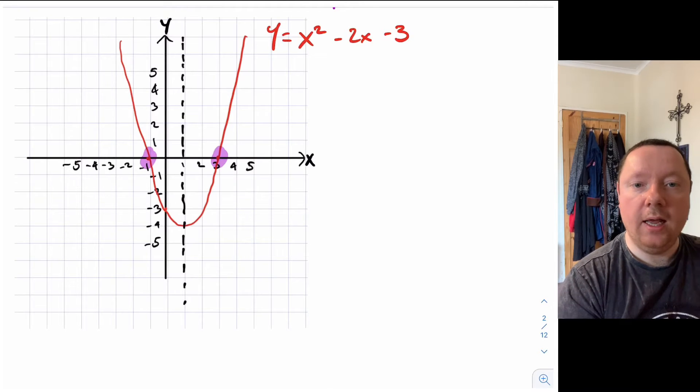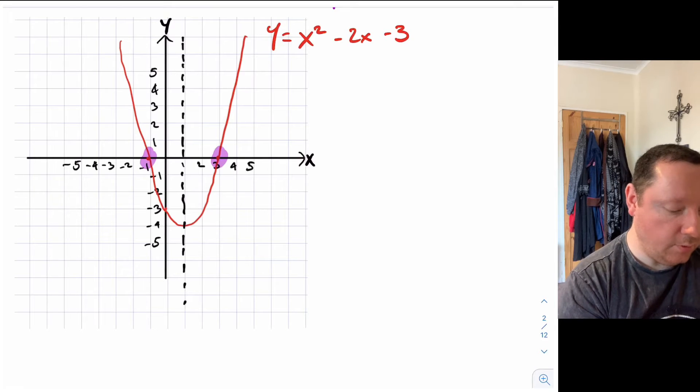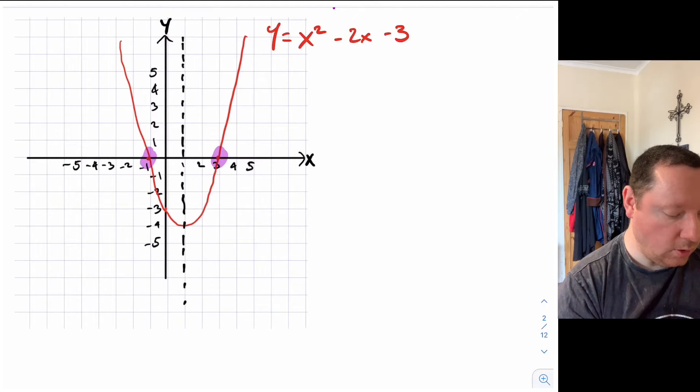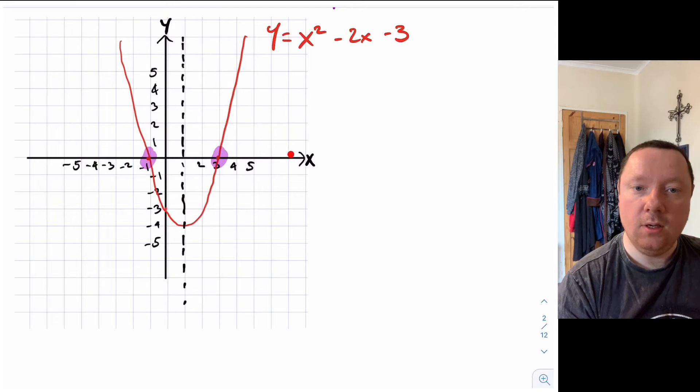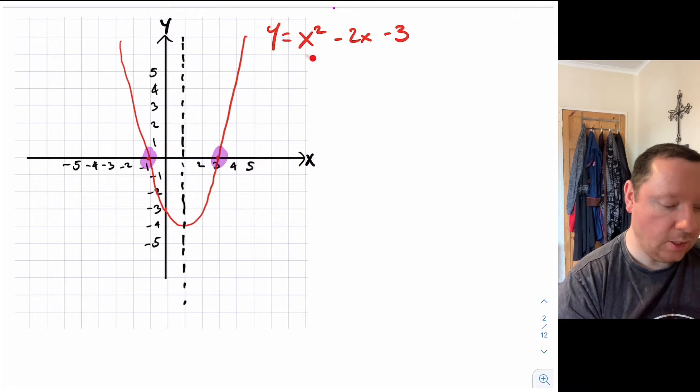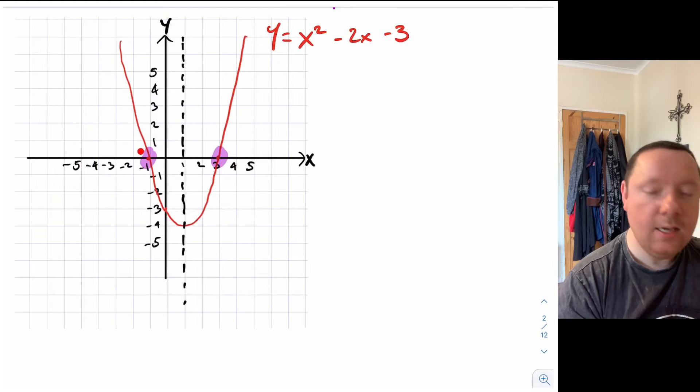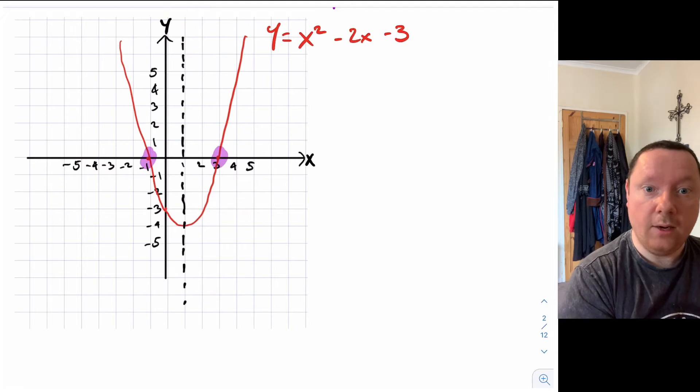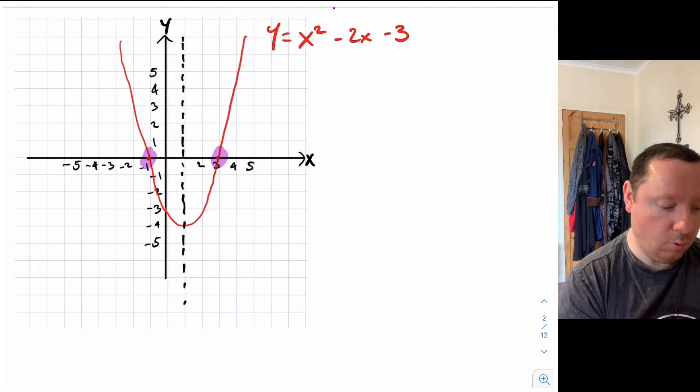If I note this point here and this point here, this is where it cuts the x-axis. Now it cuts the x-axis - if you go along the x-axis you're never going up the way, you're never going up the y-axis. In other words all the way along this x-axis y is equal to zero. So if I solve the equation and make it equal to zero that would help me find these points which would allow me to draw the graph.